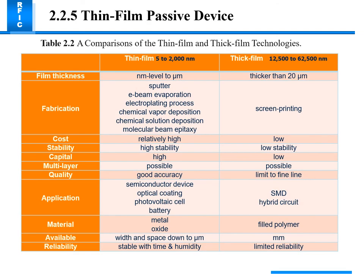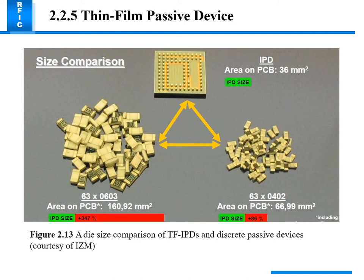Comparing thin film and thick film technology: thin film ranges from nanometer level to below 20 micrometers, while thick film is thicker than 20 micrometers. Thick film uses screen printing; thin film uses sputtering, e-beam, and electroplating processes. Thin film has high cost but high stability and good accuracy with fine line definition using metal oxide and filler polymer. A size comparison shows a PCB board area of 160x92 mm compared to 66x99 mm for IPD, demonstrating the reduced IPD footprint.